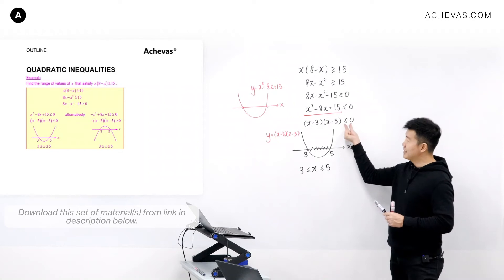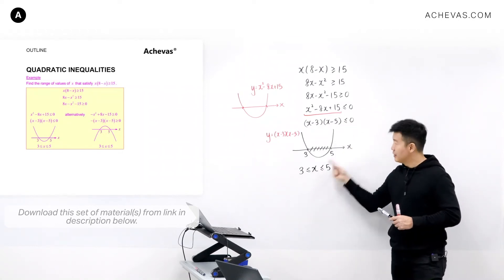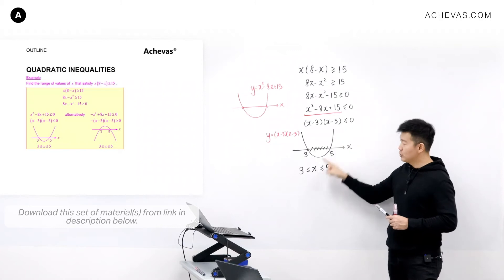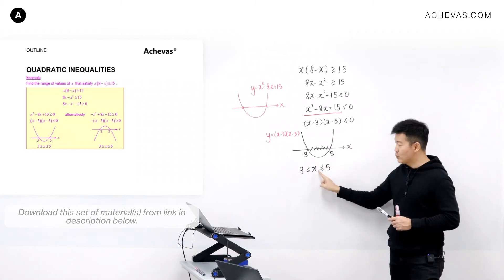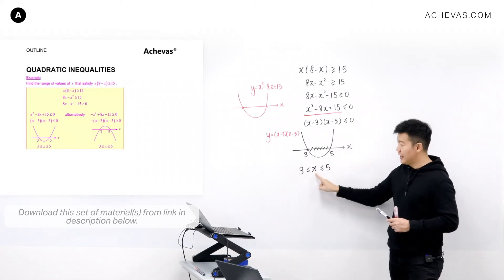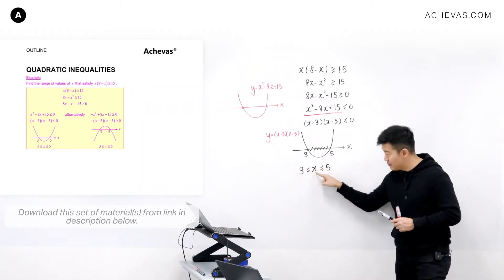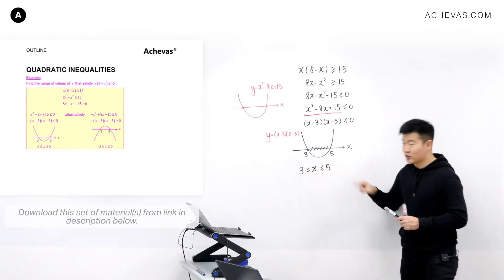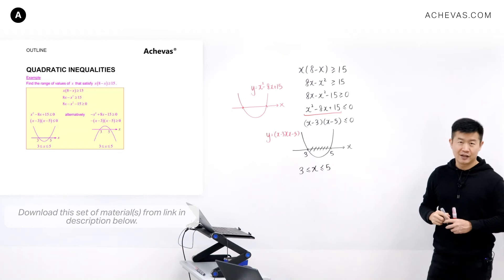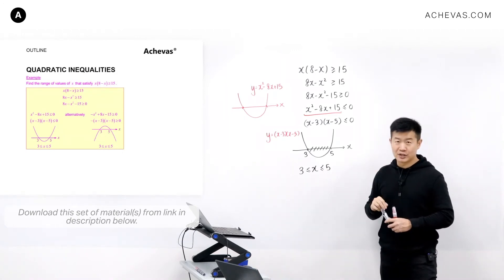I'm transporting the inequality symbol to the solution. If it has an equal-to, then it becomes 3 ≤ x ≤ 5. If it is strictly less than, then x is strictly between 3 and 5 — bigger than 3 and strictly less than 5, without the equal notation.